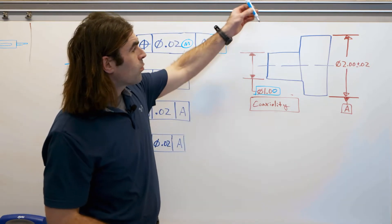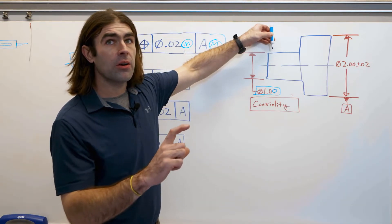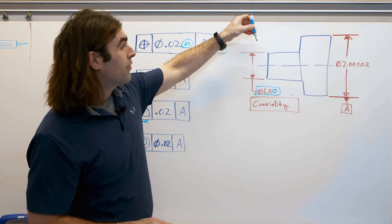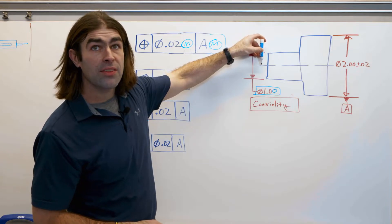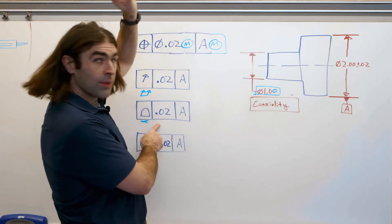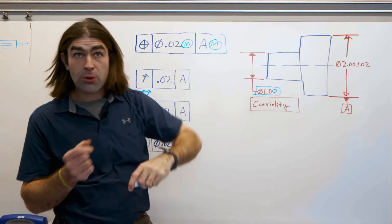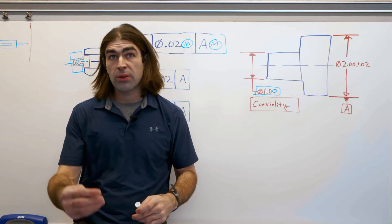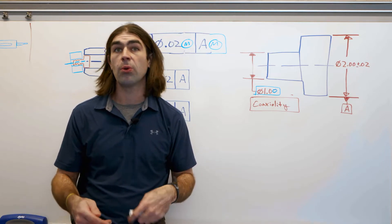So with run out we can put the indicator here, zero the indicator, and then check the part. With profile we have to measure from the datum axis to out here and then see if it's within this 20 thousandths. So you're measuring the size as well as the location. So it's a much more difficult tolerance to inspect.